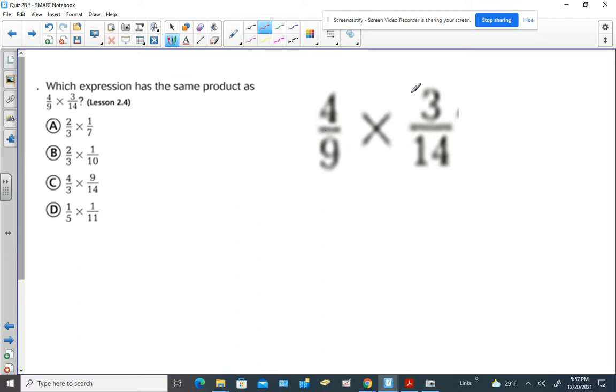So let's start with the obvious. 3 is a factor of both of these. So if we divided by 3, we would get 1. And if we divided by 3, we would get 3.